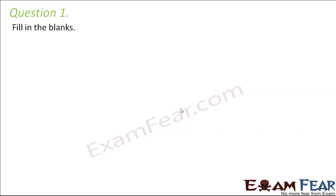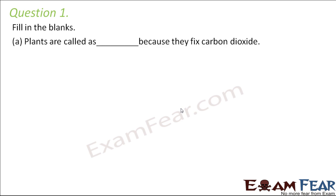Question number one. Fill in the blanks: plants are called as dash because they fix carbon dioxide. Plants take in carbon dioxide during the process of photosynthesis to prepare their own food, and that is why plants are called autotrophs. So plants are called autotrophs because they fix carbon dioxide.